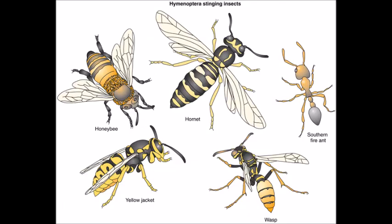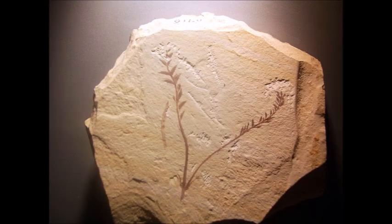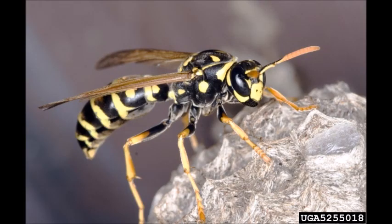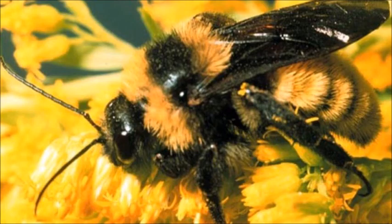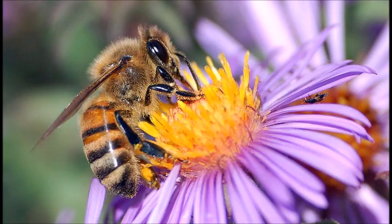Hymenopteran insects — that is, sawflies, wasps, bees, and ants — have been around since the Triassic, around 235 million years ago, while the earliest true angiosperm, the Cretaceous Archaefructus, is dated to about 125 million years ago. Clearly, the Hymenopterans were doing other things before the angiosperms arrived, but once they did, bees unknowingly entered a relationship with angiosperms that has lasted millions of years. Bees transport the flowers' pollen to new locations to grow new flowers, while flowers give bees nectar to take back to the hive. Over the generations, the two have become inextricably bound to each other.